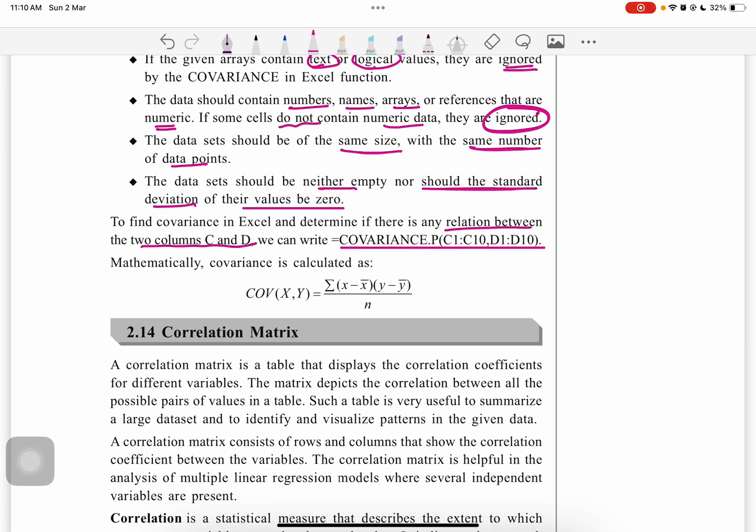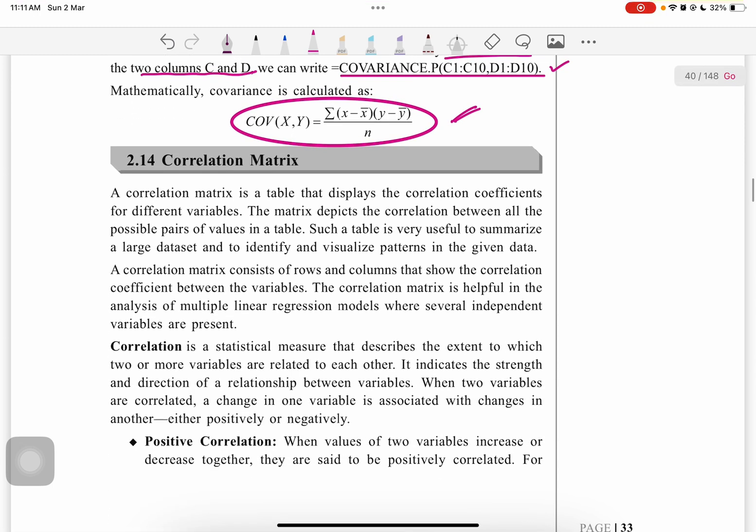To find covariance in Excel and determine if there is any relation between two columns C and D, we can write COVARIANCE with the two ranges, and the answer will appear. Mathematically, covariance is calculated using this formula, shown only for information purposes.